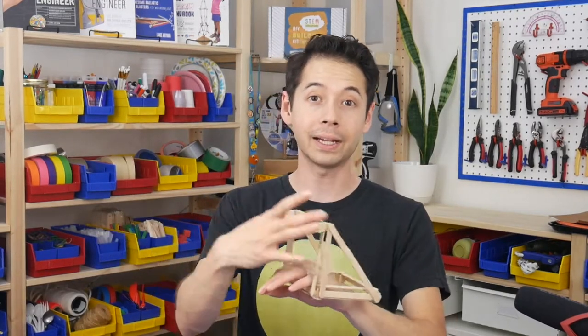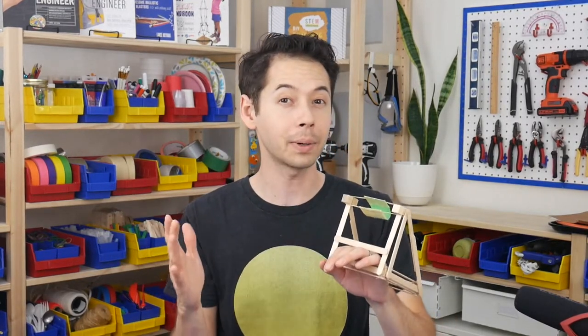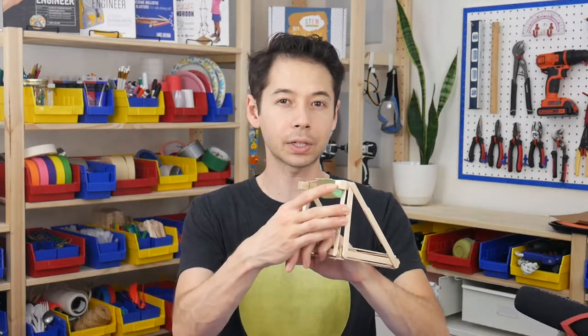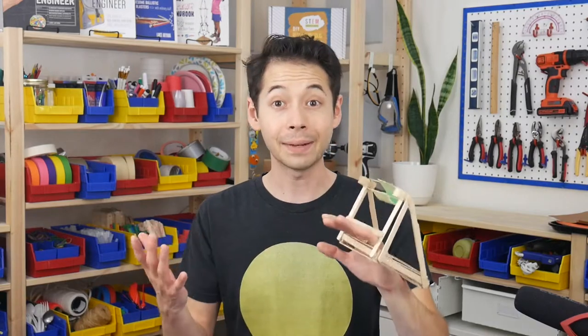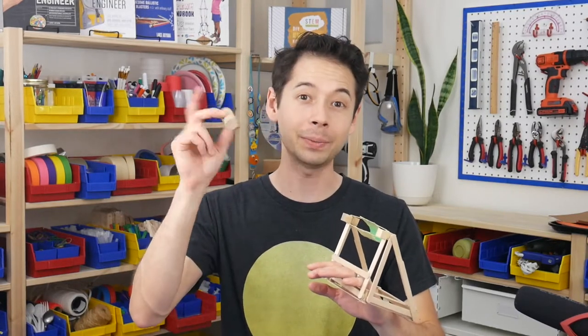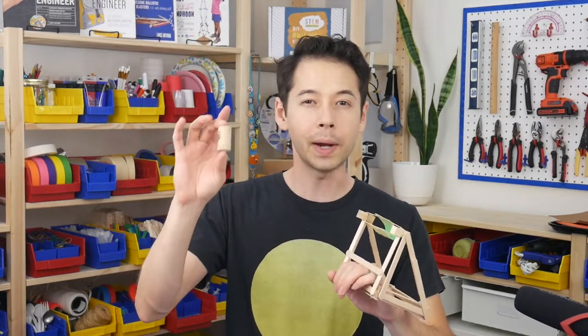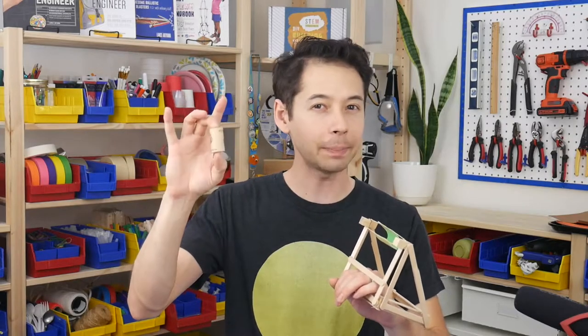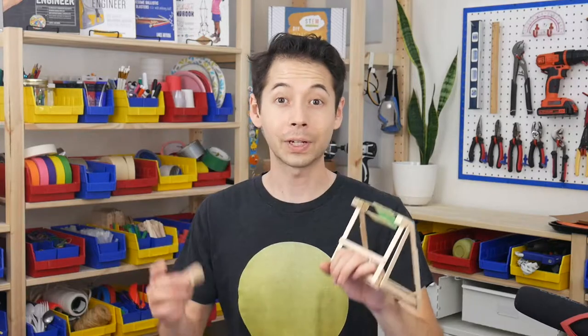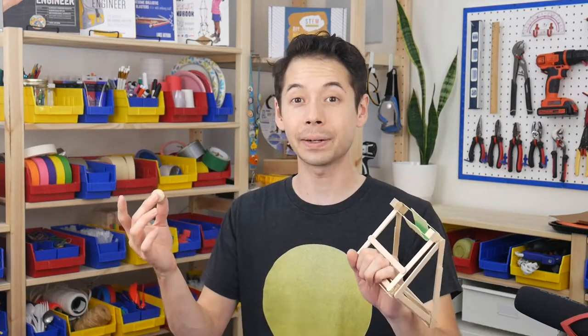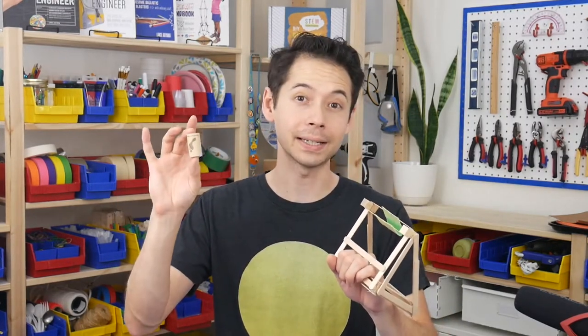You can also try making it more powerful by adding on more rubber bands, which may require you to redesign it to make the structure even stronger to accommodate that additional force. And my personal favorite, you can experiment with the projectiles. The weight and density and shape and size all affect how far the slingshot can shoot. So if you're going to experiment with one thing, I definitely recommend trying out different projectiles.